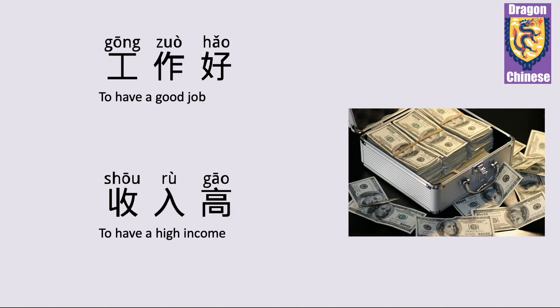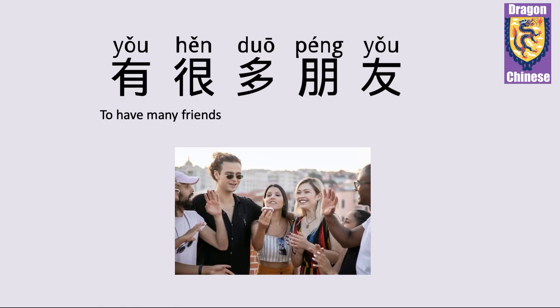工作好 — to have a good job. 工作 means job, 好 means good. 收入高 — to have a high income. 收入 means income, 高 means high. 有很多朋友 — to have many friends. 有 means to have, 很多 means many, 朋友 means friends.